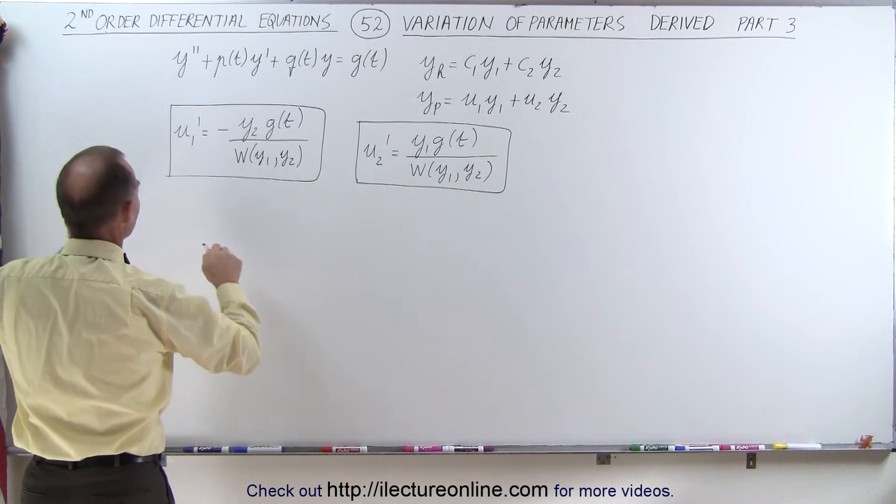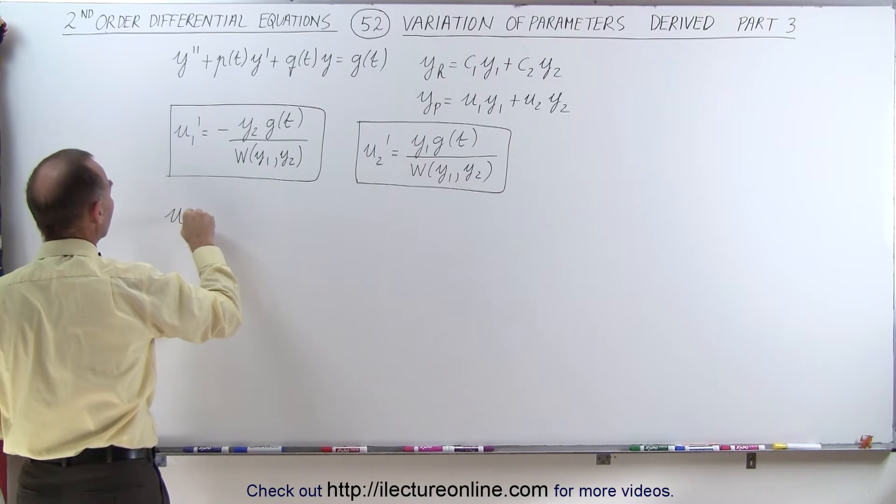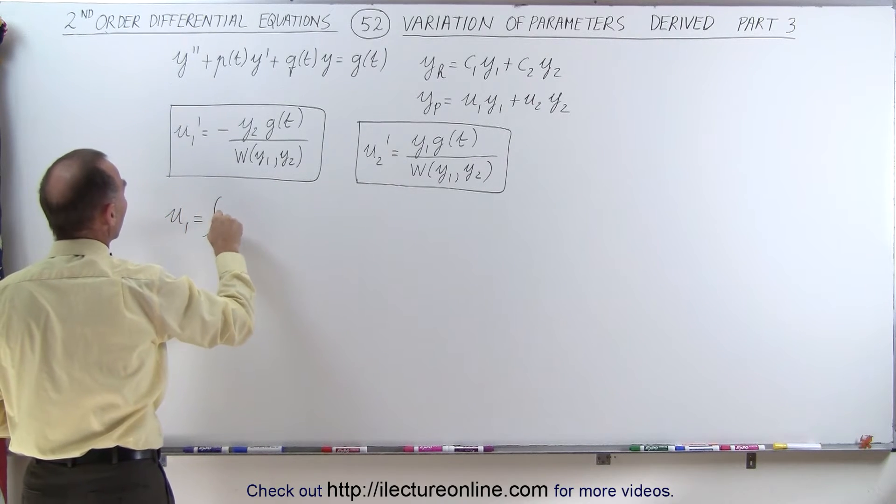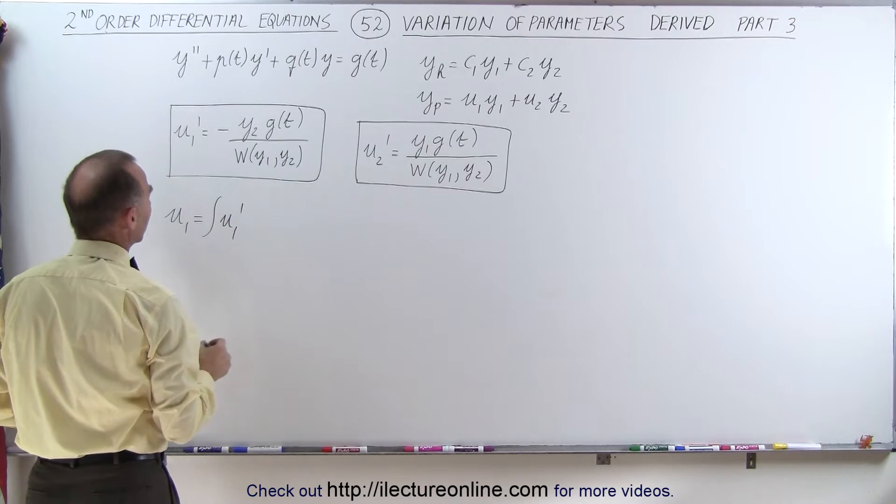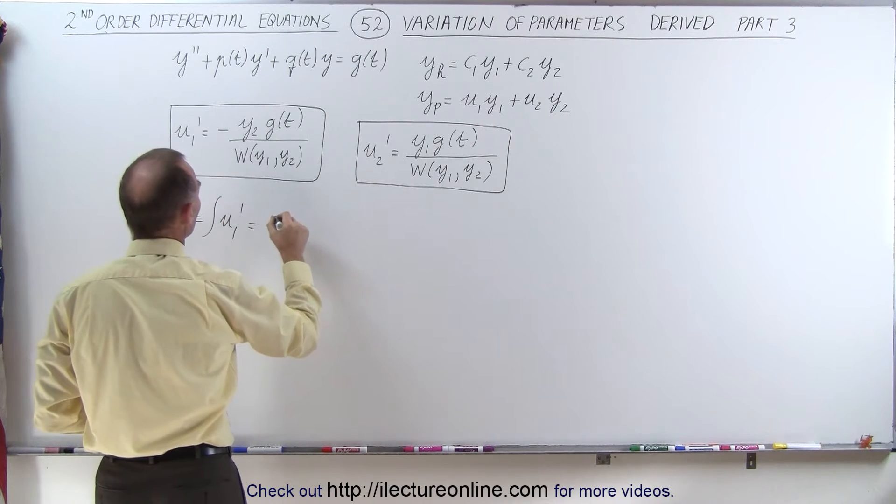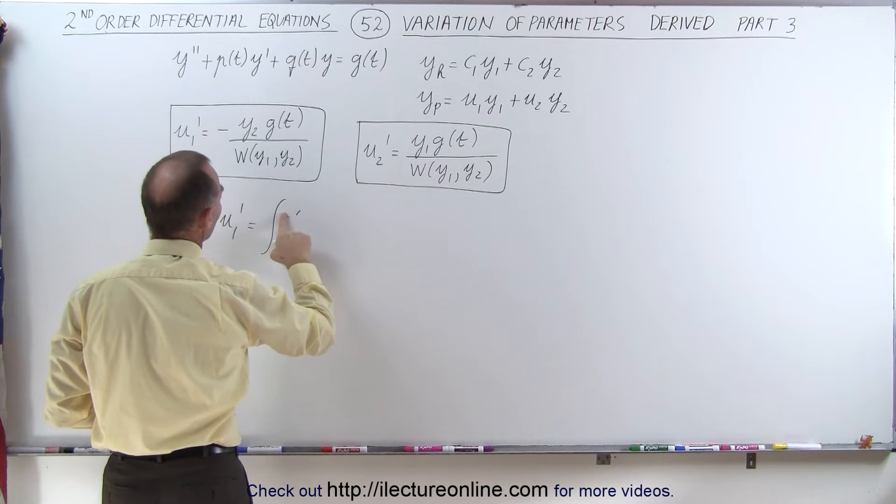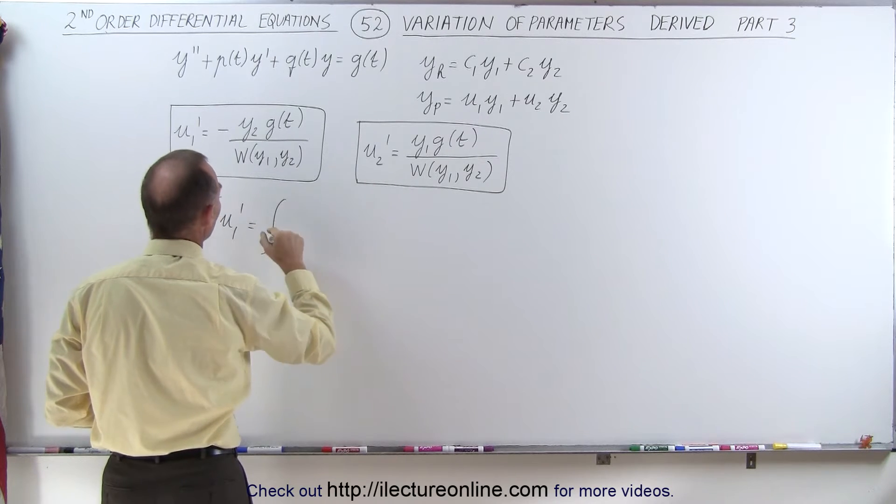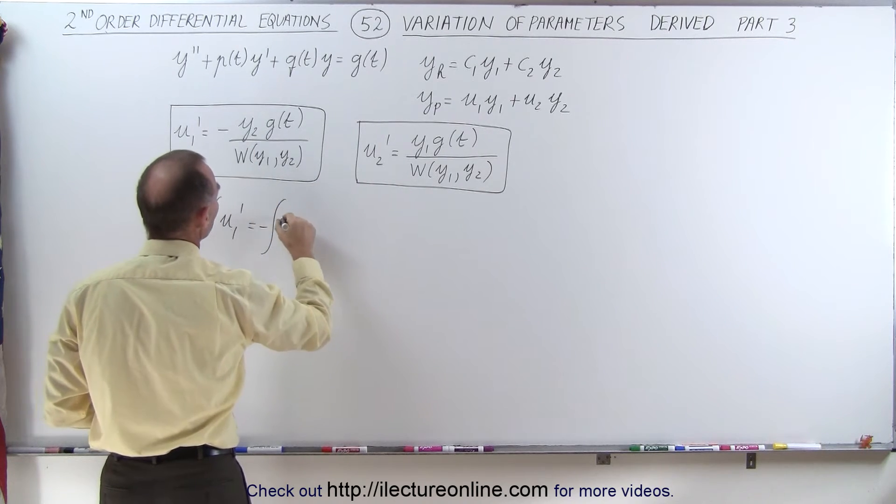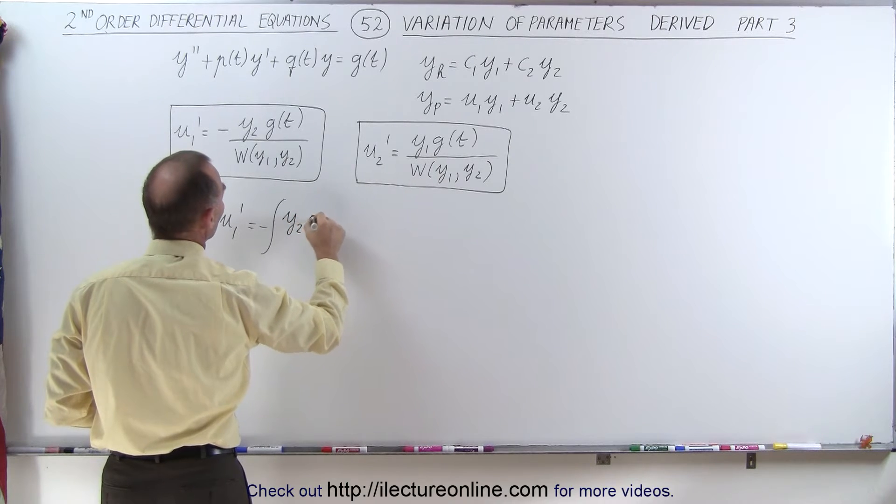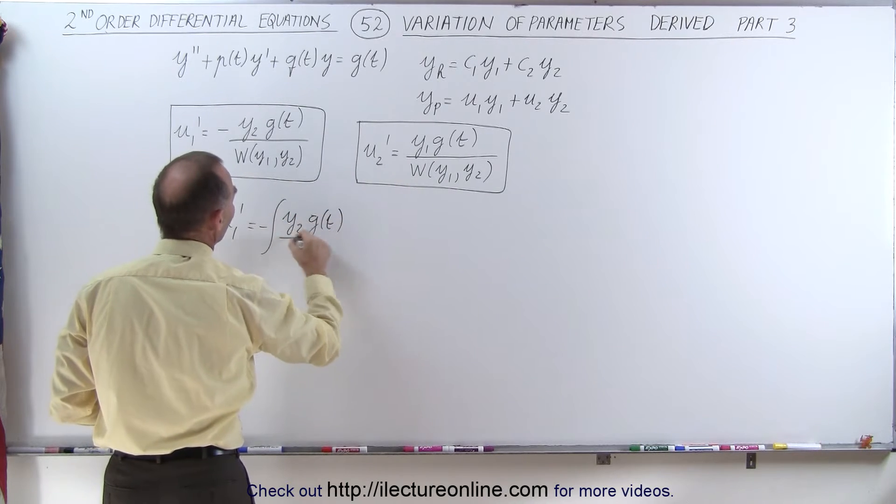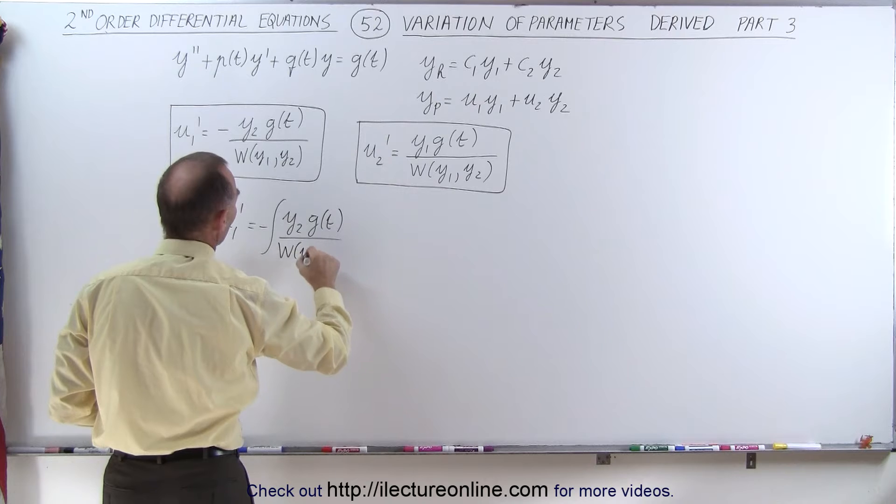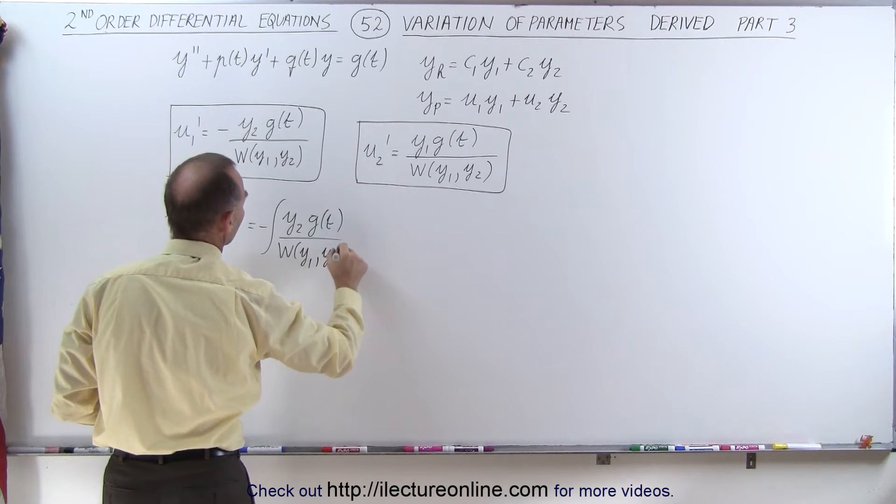So to get u1, u1 is going to be the integral of u1 prime. That's going to be equal to the integral of minus... we can put the minus in front, so we have y2 times g(t) divided by the Wronskian of y1 and y2, dt.